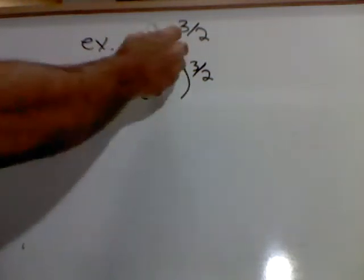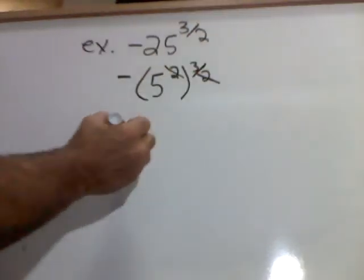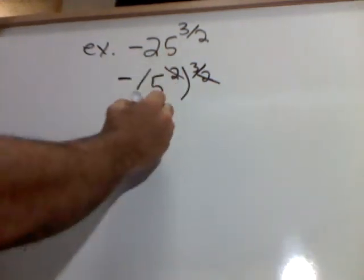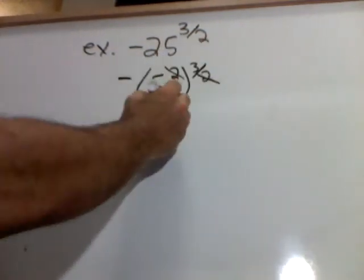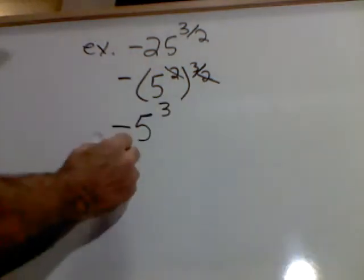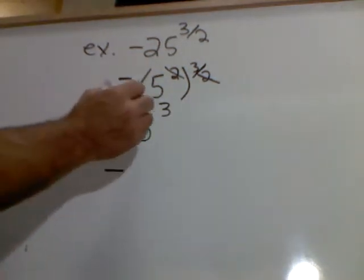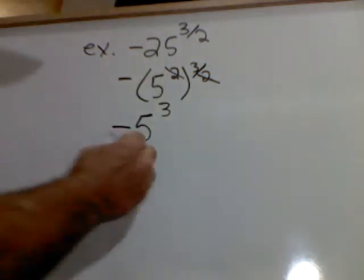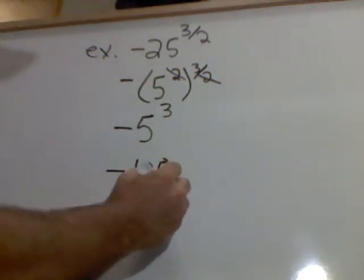Still to the 3 halves exponent on the outside. Well, guess what? The 2's cancel. I bring down my negative, and that gives me 5 with exponent left as 3. The negative comes down, and then 5 to the third power is 125.